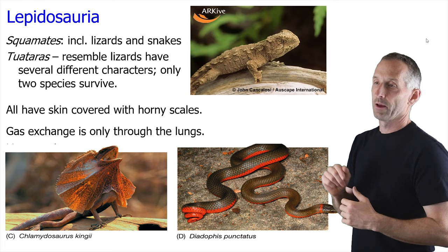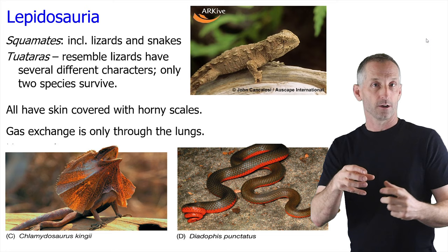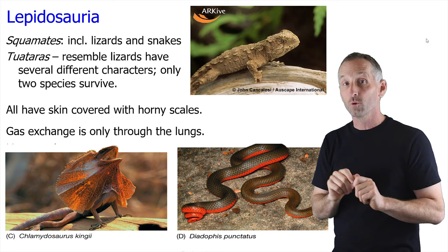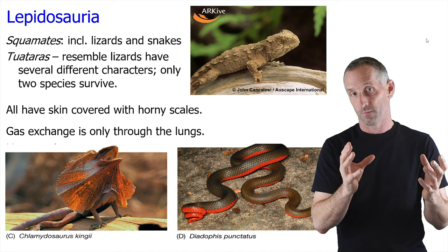Now I want to focus more on Lepidosauria, which is another very diverse group that includes the squamates — lizards and snakes — but also this cool thing called tuataras. Tuataras resemble lizards, but they're not on the evolutionary part of the tree that represents lizards themselves.